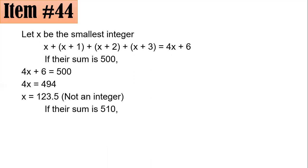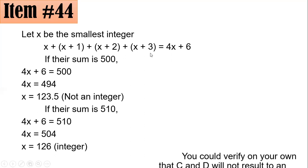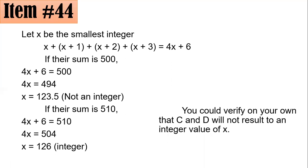What about if the sum is 510? Equating 4x plus 6 to 510, subtracting 6 from both sides gives 4x equals 504. Dividing both sides by 4, you get 126, which is an integer. So it can be expressed as 126 plus 127 plus 128 plus 129. You could verify on your own that C and D will not result in an integer.